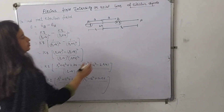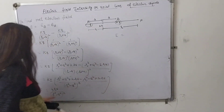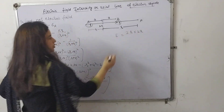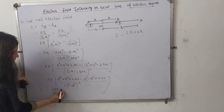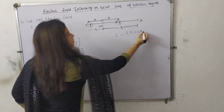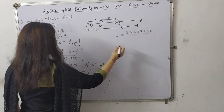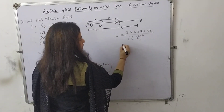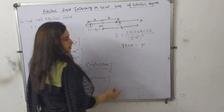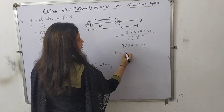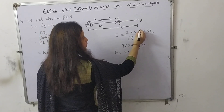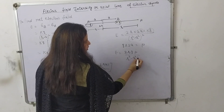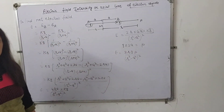Therefore E equals KQ times 4RA upon (R squared minus A squared) squared. Since Q times 2A equals the dipole moment P, we can write 4RA as 2R times 2A. So E equals 2KPR upon (R squared minus A squared) squared, where P is the dipole moment.